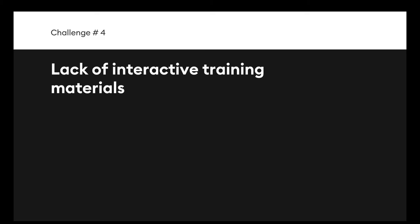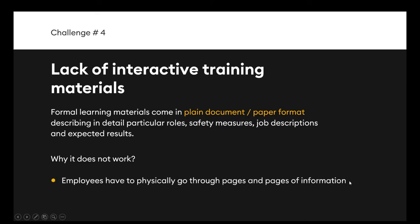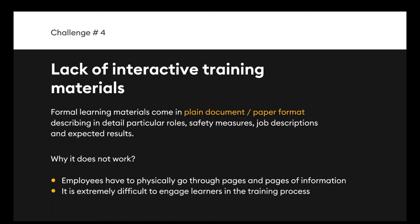Challenge number four: according to our clients, the best way to clarify expected results is to develop formal documentation. Most of the materials they had developed were in plain text format and not ready to be turned into actual training. In the manufacturing industry, the safety of staff and quality of the product depends on accuracy. Formal documents were folders and folders of paperwork describing each little detail of a particular role, job description, task, and expected results. Employees had to physically go through pages and pages of information written in formal, hard-to-comprehend language, making it extremely difficult to engage learners in the training process. Learners start to lose interest and can miss crucial information, which can lead to fatal mistakes.